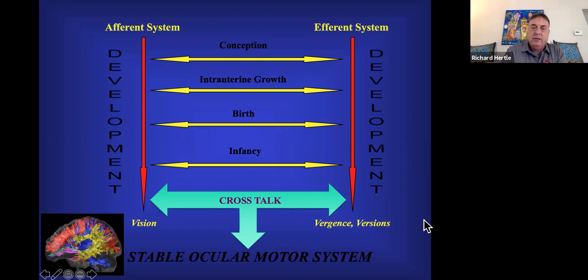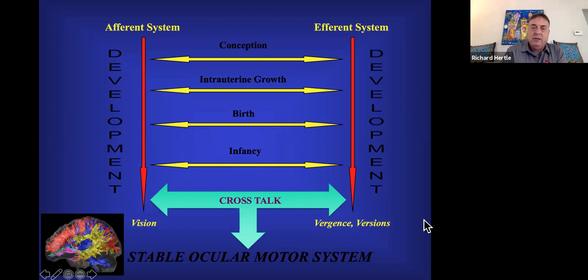A child born with bilateral complete congenital cataracts gets no vision during the developing critical period. The visual system gets turned on at birth and the brain expects images, light, motion, and color — but it's not getting them. The afferent system is slowed down, and as a result the nystagmus develops. We know this because if we take out the cataracts and restore optical clarity during that window, the nystagmus actually goes away.